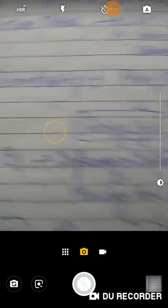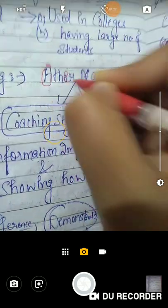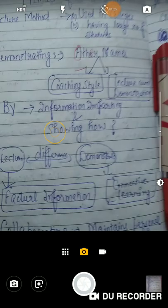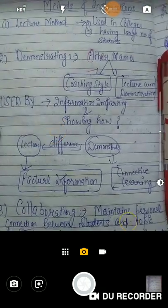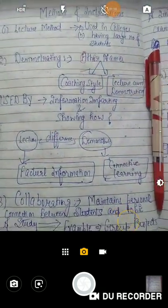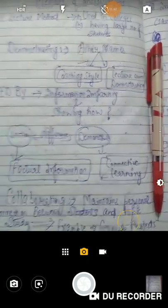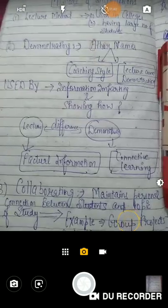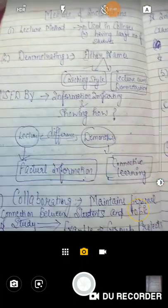उसके बाद है demonstrating। Demonstrating के other names भी आते हैं — coaching style भी बोला जाता है, lecture come, demonstration भी कहा जाता है। Demonstration का यूज किया जाता है जब हमें knowledge impart करनी हो — information imparting and showing how. मतलब, सबसे पहले उनको बताओ, बेटा ऐसे ऐसे होता है, उसके बाद उन्हें करके दिखाओ — showing how कि इस चीज़ को हम कैसे कर सकते हैं।